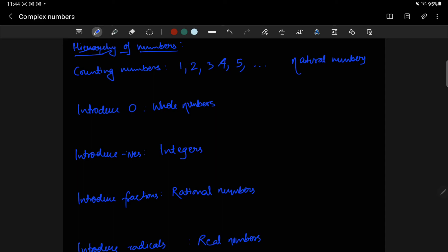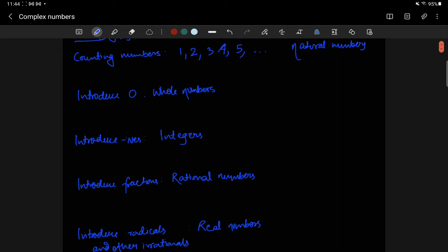These were obviously the first numbers to be used because we are counting things around us like five fingers, two hands, etc. Then the next big development was the introduction of zero, which created the system of whole numbers where because of the zero, now you have this place value system, which means you can write these numbers using just 10 symbols. And these are called whole numbers.